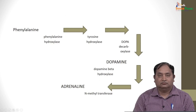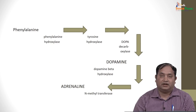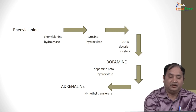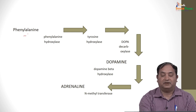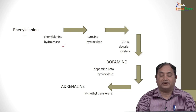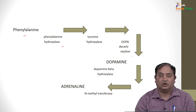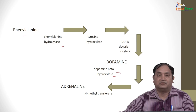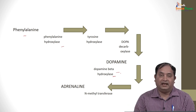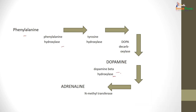Now, how is it produced in the body? We have phenylalanine, which is converted by phenylalanine hydroxylase, then by tyrosine hydroxylase, ultimately forming dopa or dopamine. By the action of dopamine beta-hydroxylase it is converted into noradrenaline, and then by N-methyltransferase it is converted into adrenaline. So you get adrenaline acting on alpha and beta receptors, and in various systems you get an effect of adrenaline.